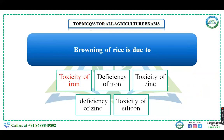Browning of rice is due to: toxicity of iron, deficiency of iron, toxicity of zinc, deficiency of zinc, or toxicity of silicon? When a nutrient is not present in adequate amounts, it may lead to disease in the crop — both excess and deficiency can be harmful. The browning of rice is due to the toxicity of iron.